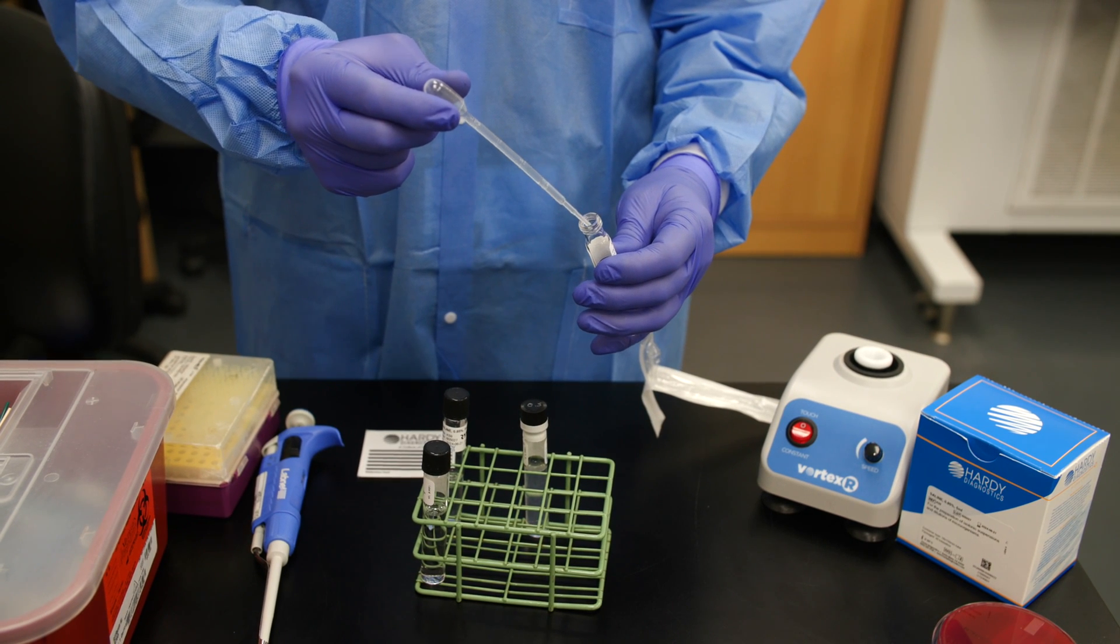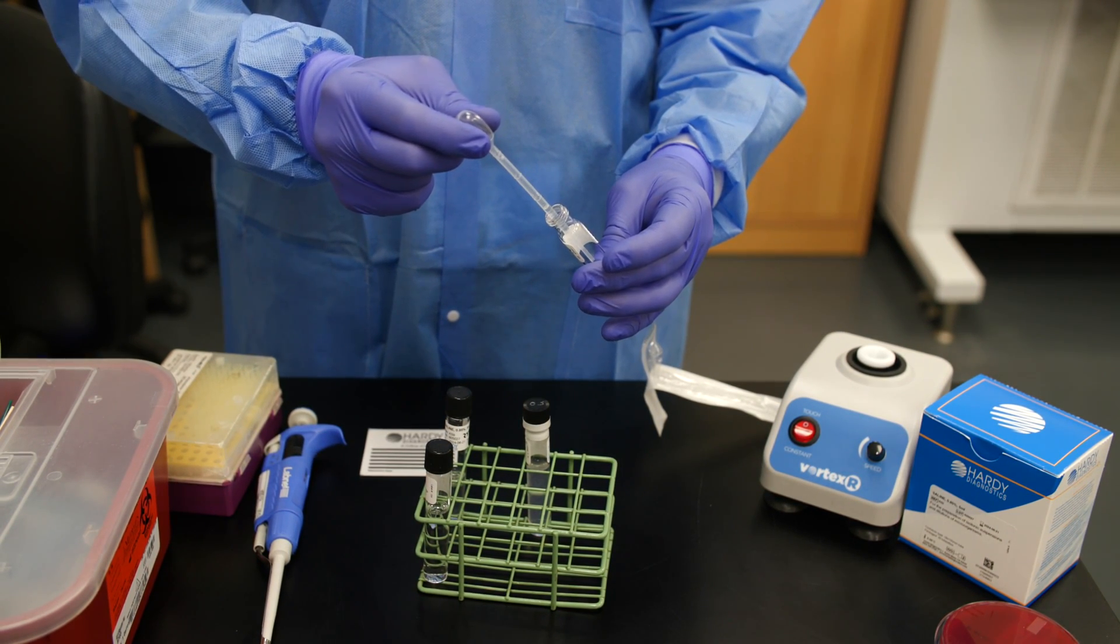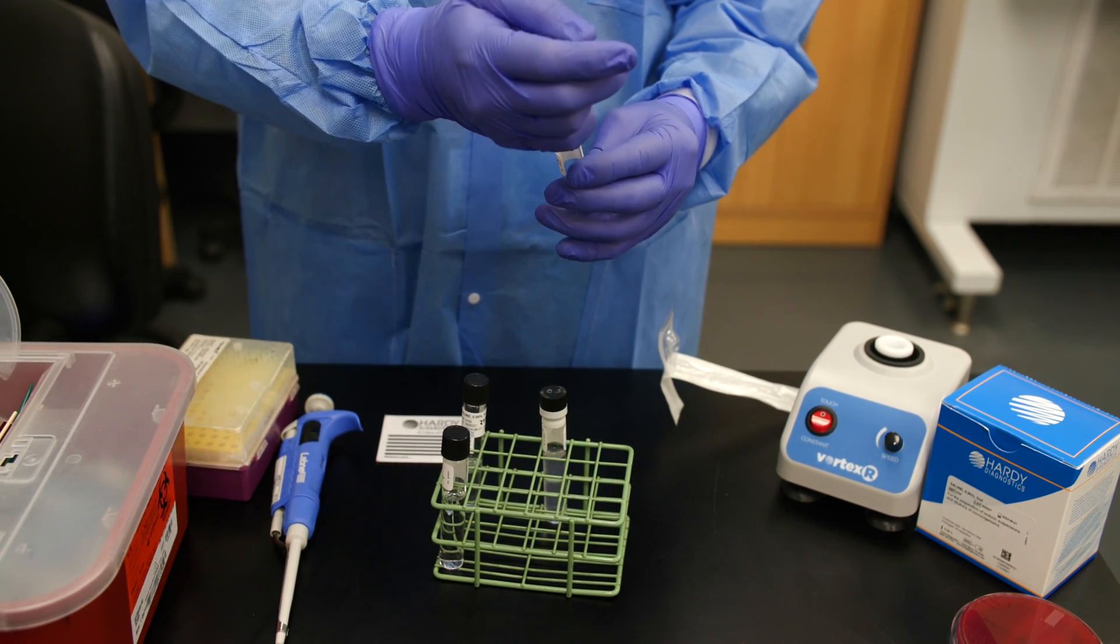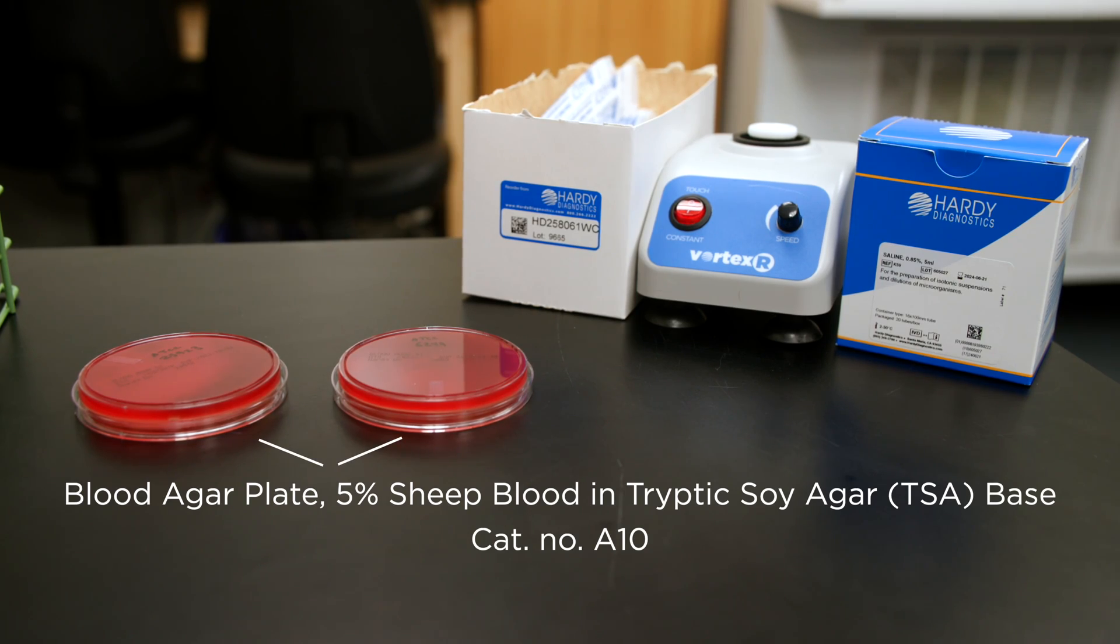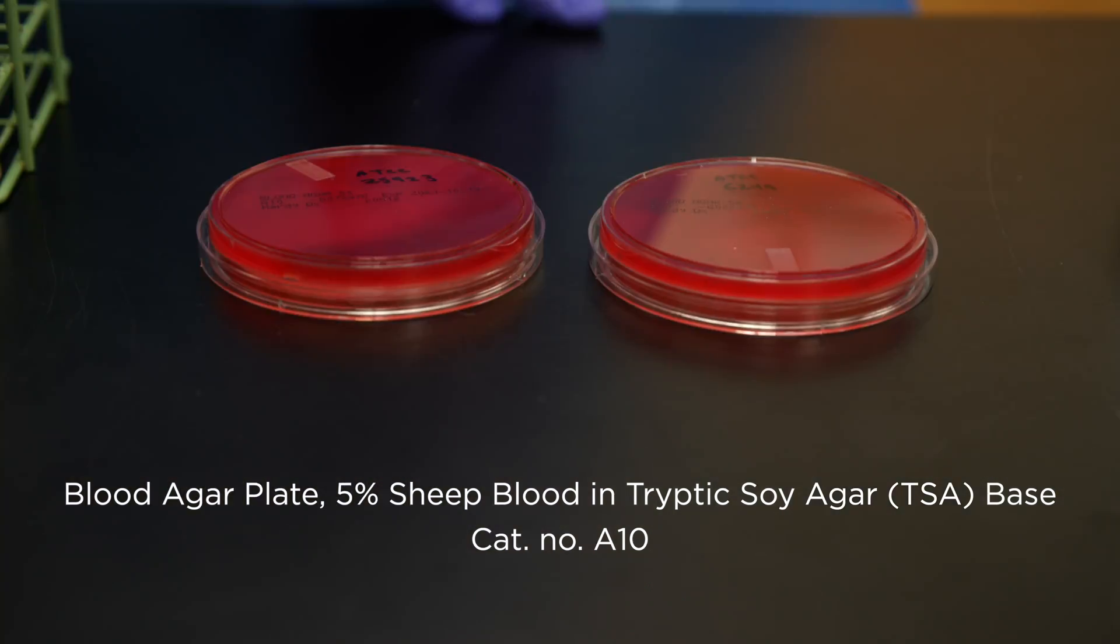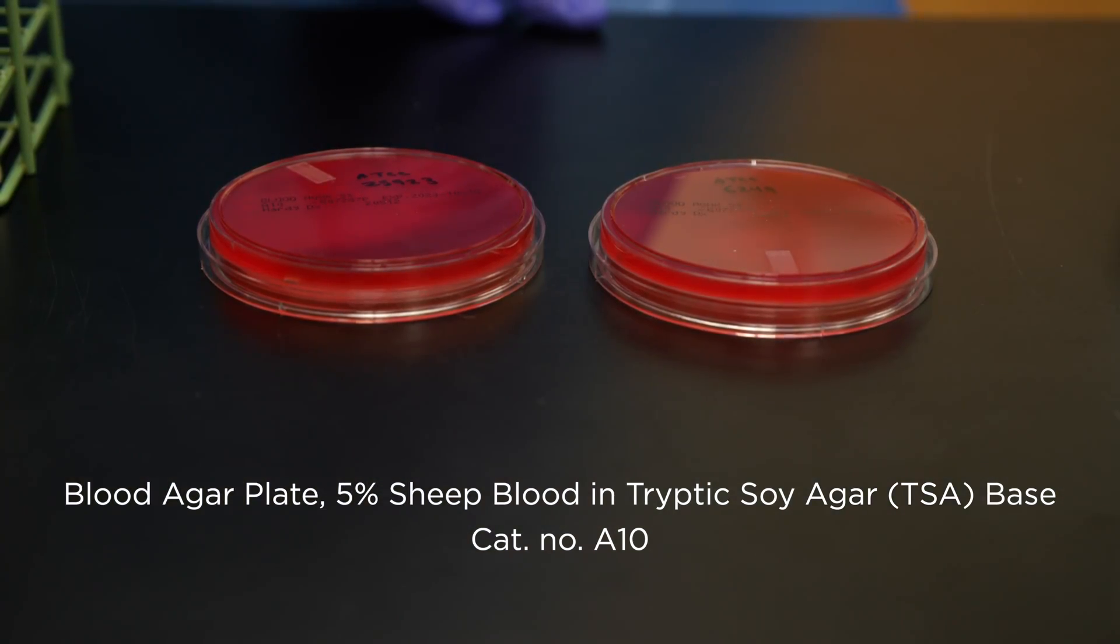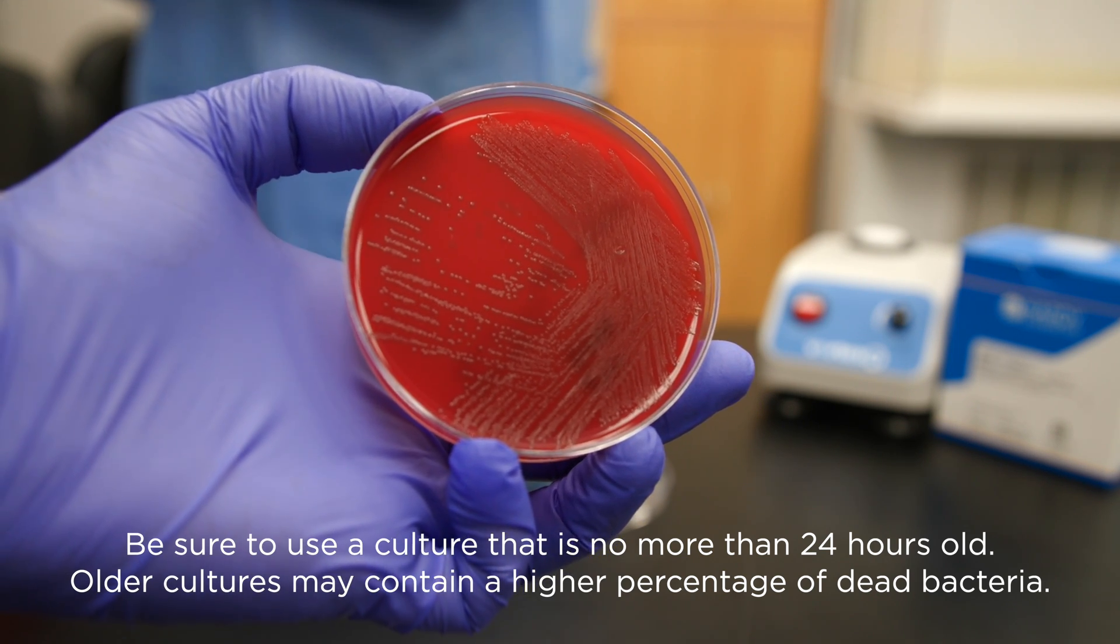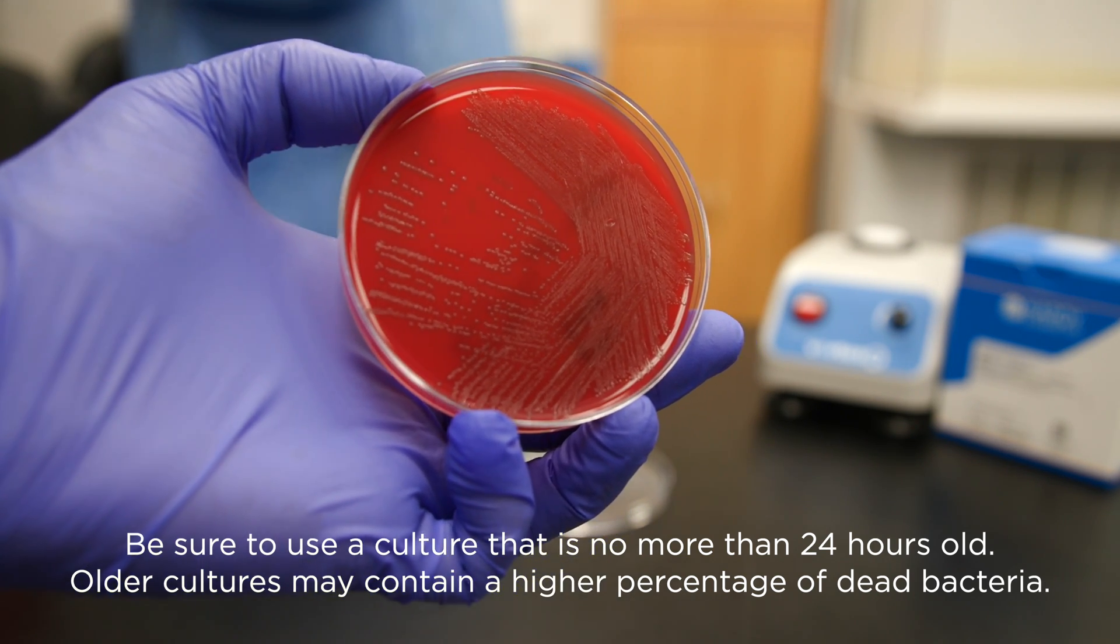Next we will cover how to prepare a bacterial suspension that is adjusted to a 0.5 McFarland using a pure culture. In this example the organism was grown on tryptic soy agar with sheep blood. Be sure to use a culture that is no more than 24 hours old. Older cultures may contain a higher percentage of dead bacteria.